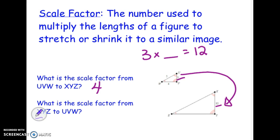When we work backwards, the second question asks us what's the scale factor from XYZ to UVW. So this time you're saying what do I have to do to this big triangle to get to the little one? So basically 12 times what equals 3?